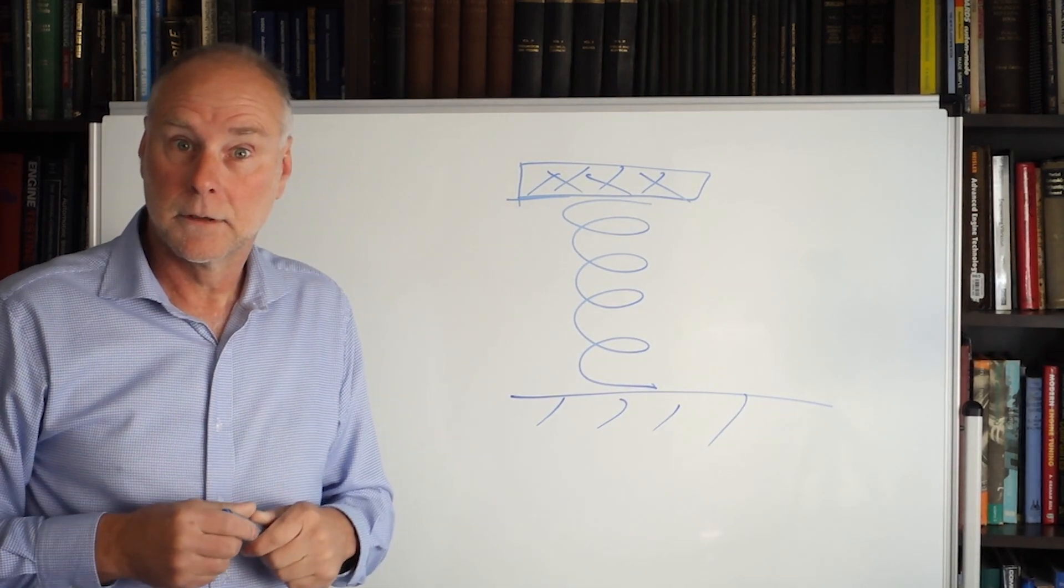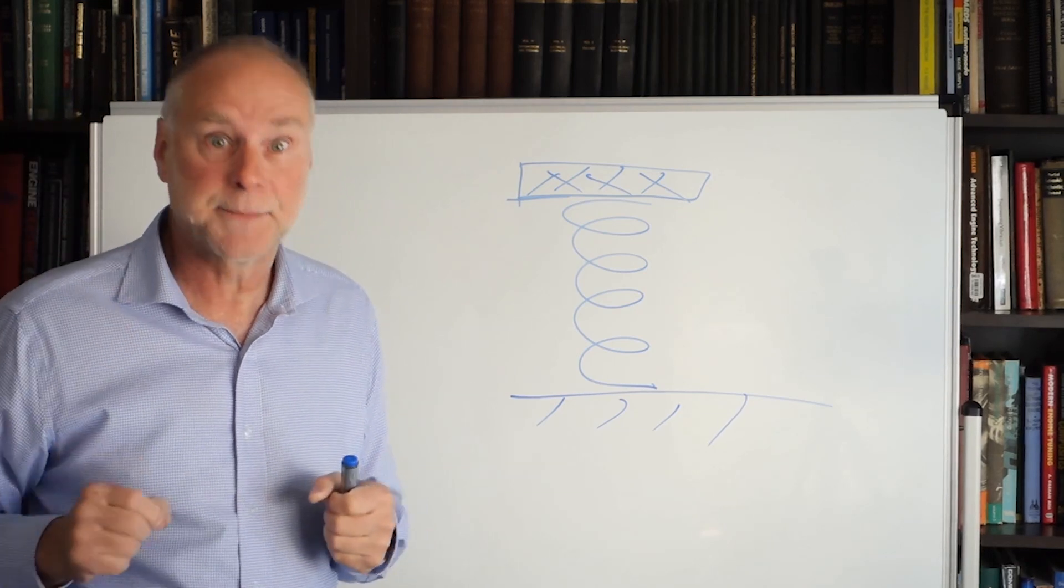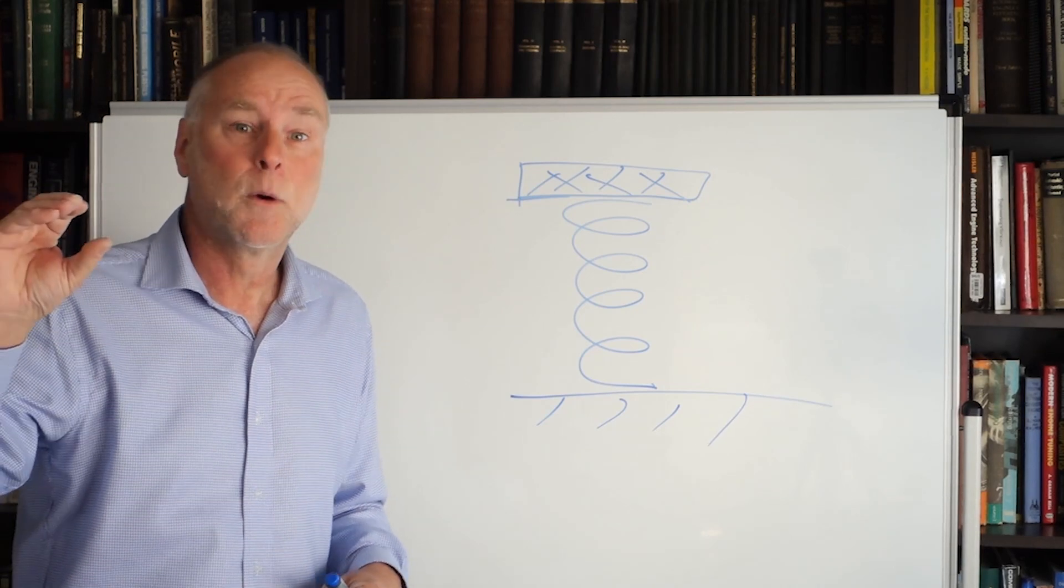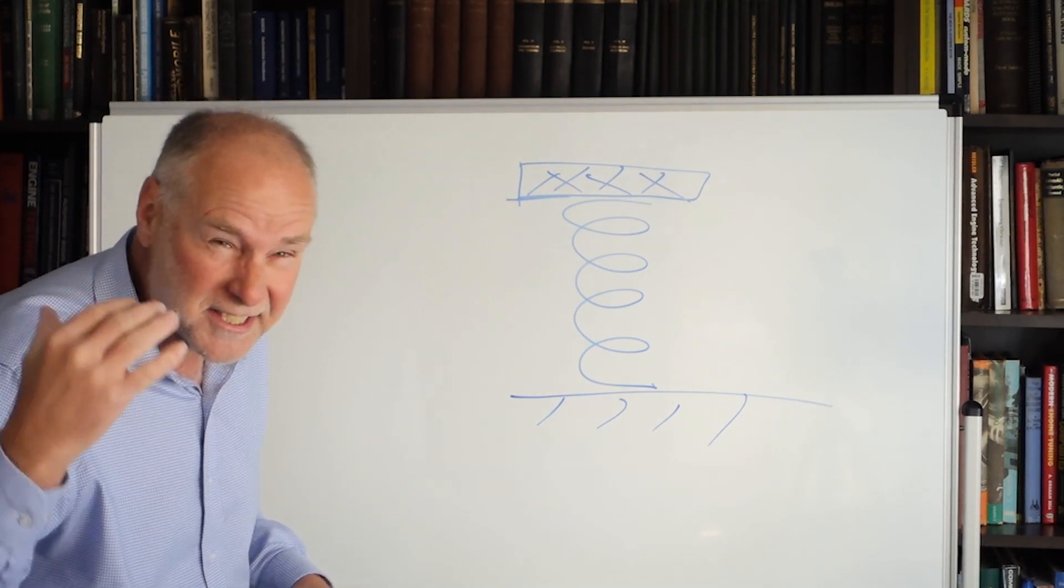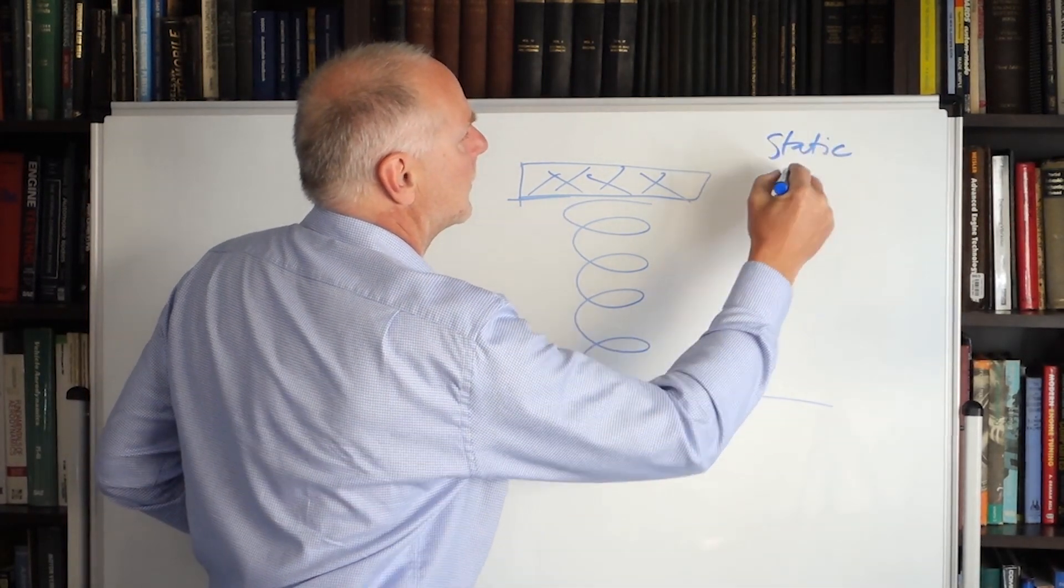Now what happens? Well, the first thing that you'll all know is that spring will have compressed by a little bit when we've put the weight on it. And the amount that the spring compresses when we put the weight on it is called the static deflection.